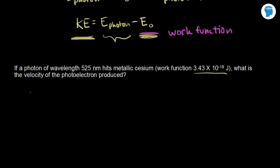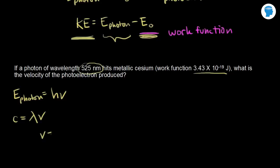The energy of the photon is equal to h — Planck's constant — times the frequency ν. We have wavelength, not frequency, so we need to relate them using c = λν, where c is the speed of light. Solving for frequency: ν = c/λ. Substituting in, the energy of the photon is equal to hc/λ.